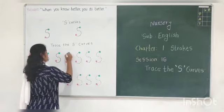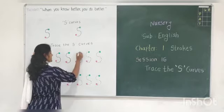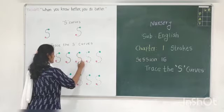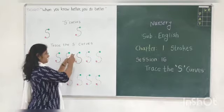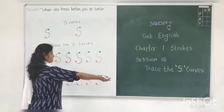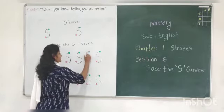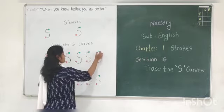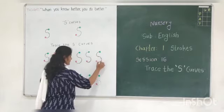You have to do this work slowly. This is an S Curve, but two curves are here. Tell me which two curves are here. Yes — one is a left curve and one is a right curve.